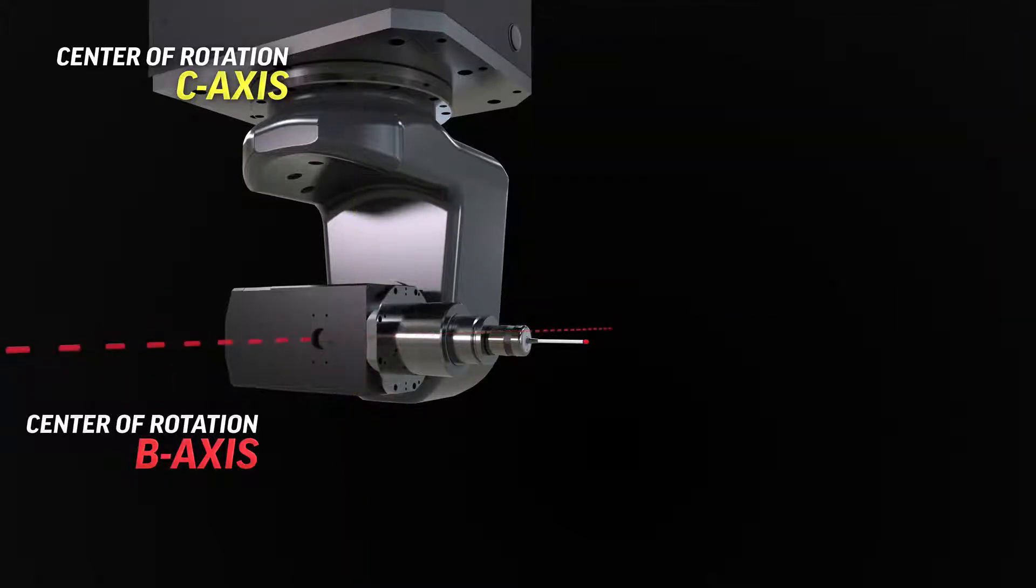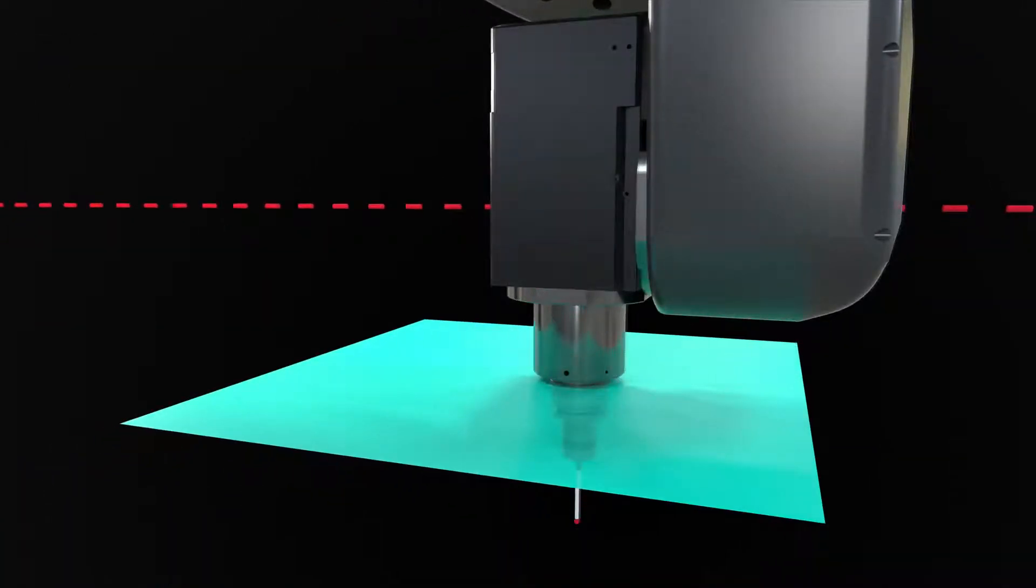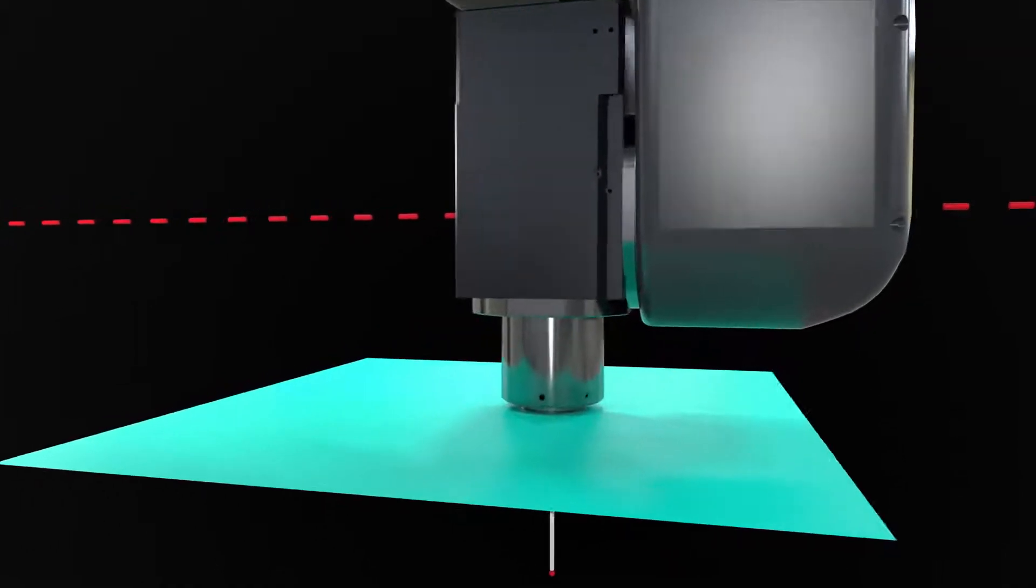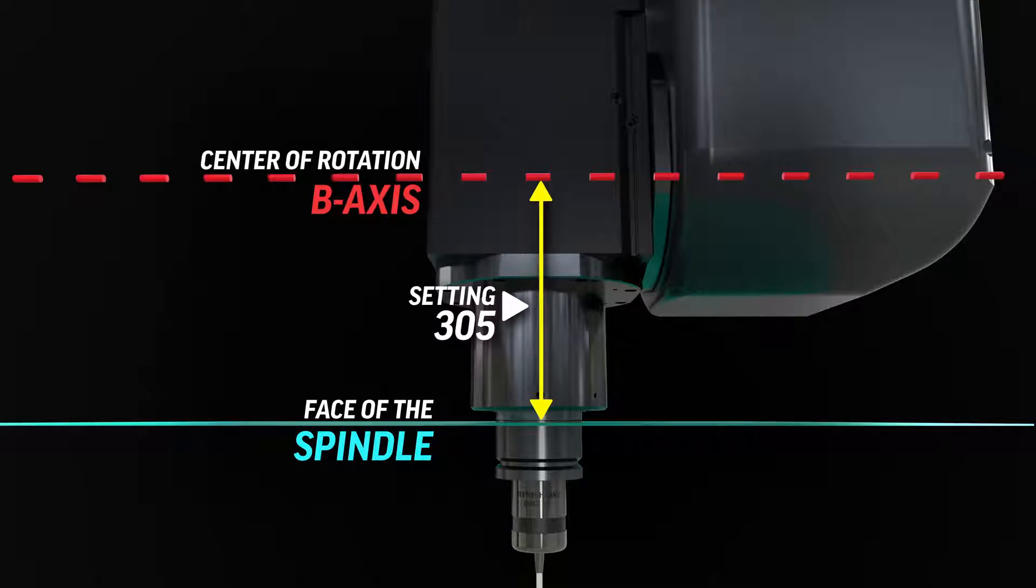And finally it will determine setting 305, MRZP Z offset slave, which is the distance from the center of B axis rotation to the face of the spindle. This is commonly known as your pivot length.